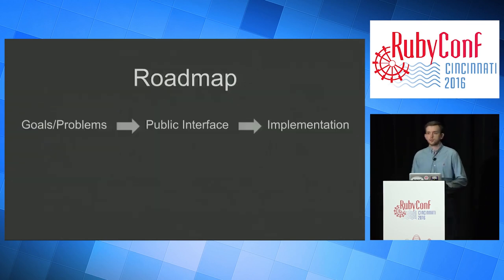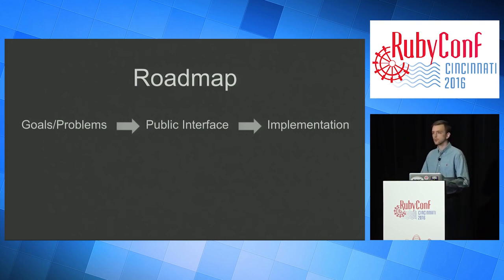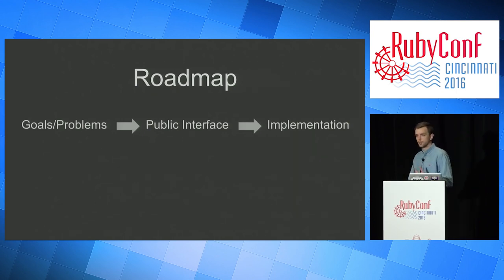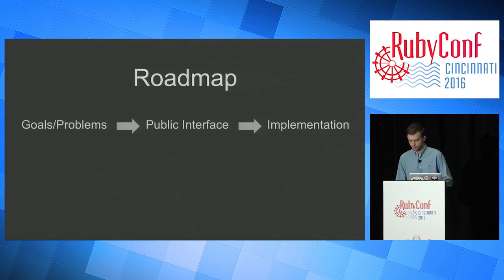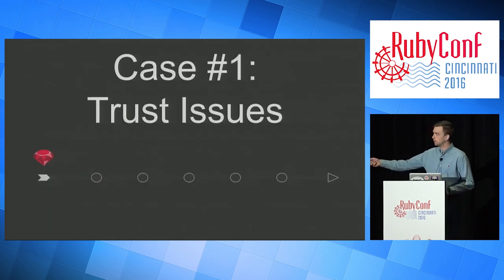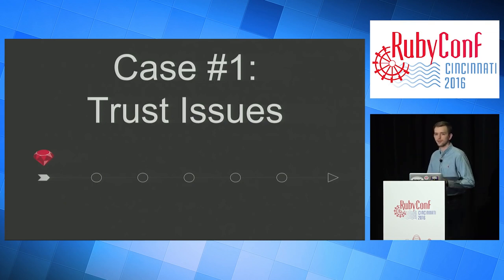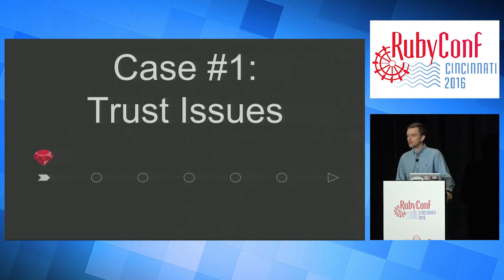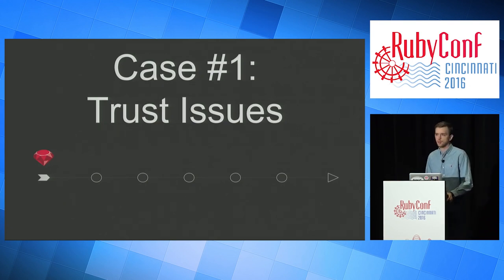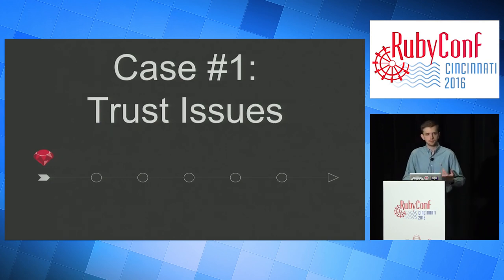The roadmap we're going to go through: we'll talk about some goals we'd like, then we'll talk about the problems associated with reaching those goals, then we'll look at the public interface that satisfies those goals, and then we'll dive deep and look at the implementation. Code heavy — beware. And the first case we're going to talk about is trust issues. Developers tend to code defensively — we want to prevent others from making mistakes and from ourselves making those same mistakes.